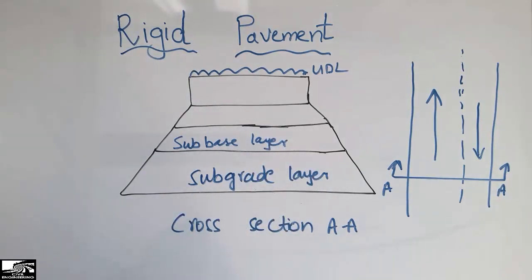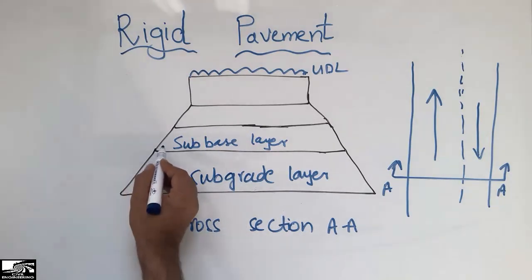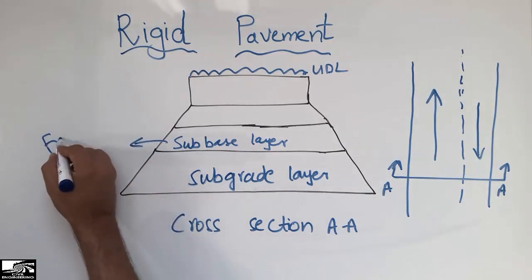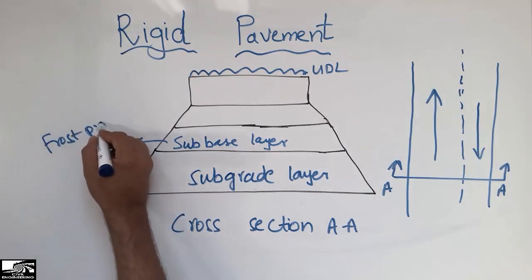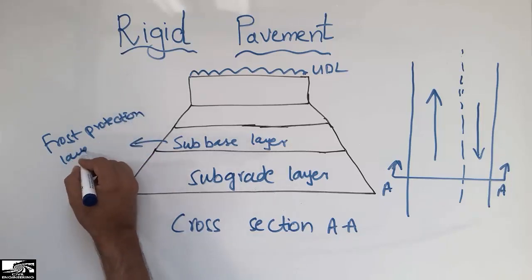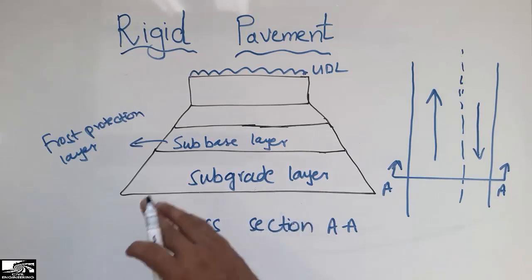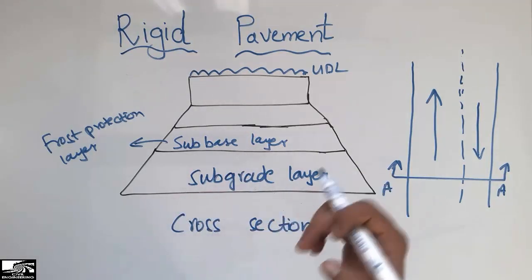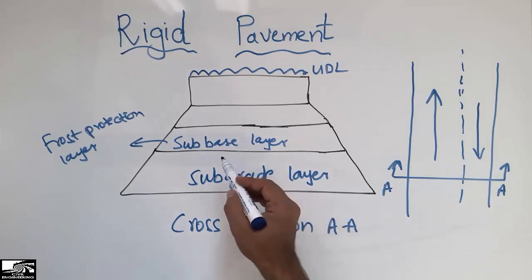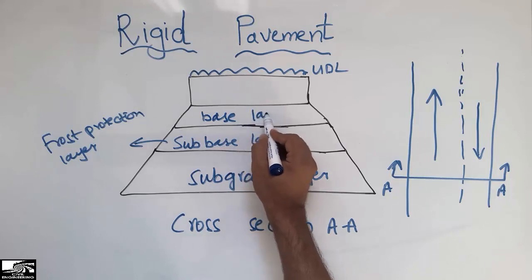The layer above the subgrade is the subbase layer, the same as in flexible pavement. This layer is used for frost protection and also for drainage, so that we have good drainage in our pavement. It is also called the frost protection layer because it provides resistance to frost deformation caused by temperature changes and cooling.